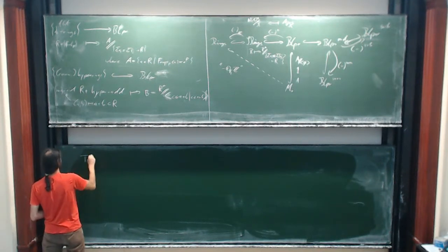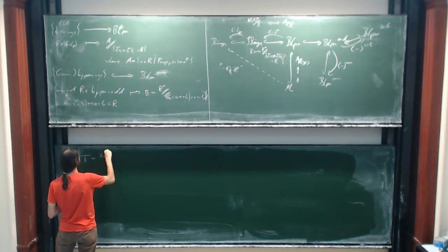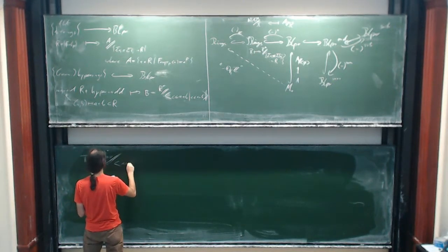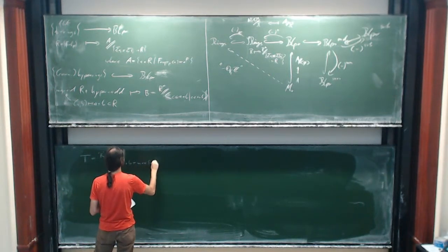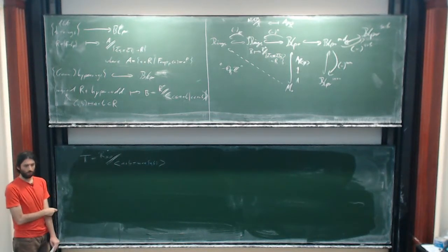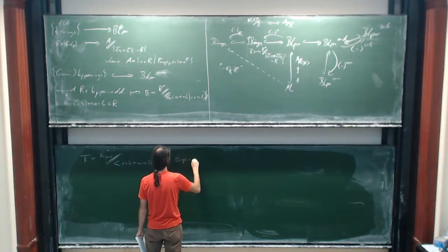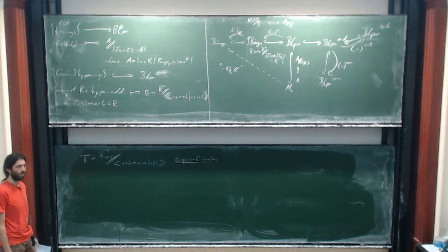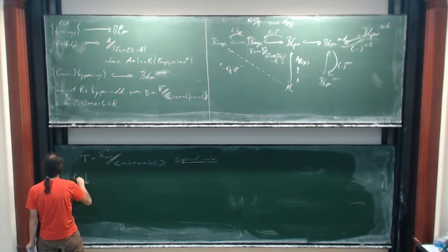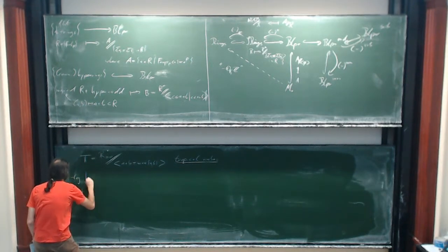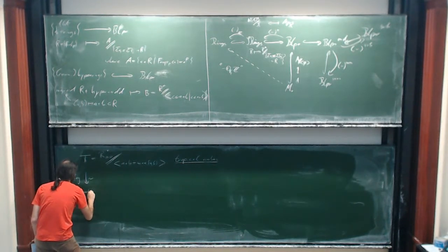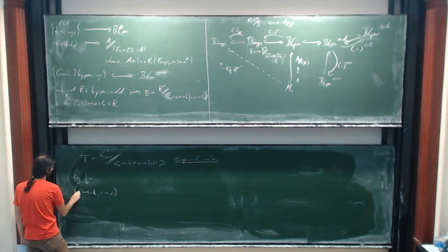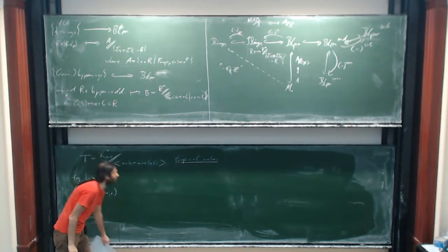Why are these two last categories — monomial blueprints and sub-ordered blueprints — important for tropicalization and analytic spaces? Because you can express evaluations and absolute values in terms of morphisms of the associated monomial and sub-ordered blueprints. The tropical numbers have underlying monoid the non-negative reals, and the addition is given by the maximum.